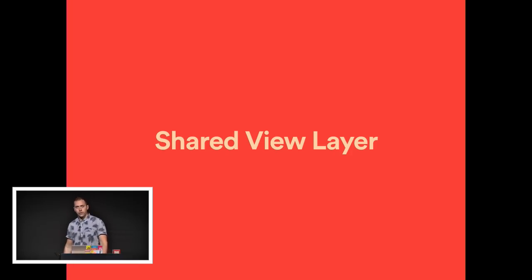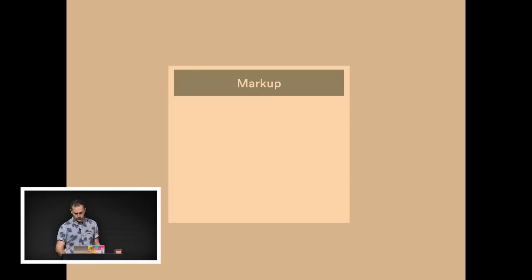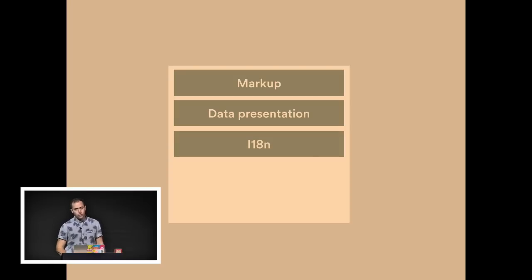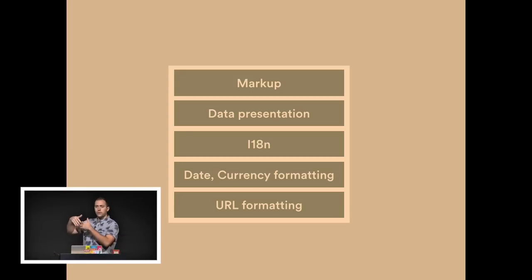It really boils down to the shared view layer. This is what lets you render a single page app on the server or the client. The view layer is made up of a few components: markup (HTML templates that can be executed on both sides), data presentation and formatting, internationalization, date and currency formatting, and URL formatting. Basically anything that goes into populating the template has to be able to run on client or server in an isomorphic app.